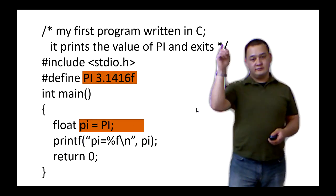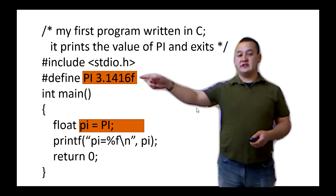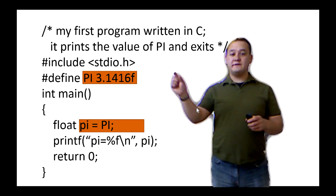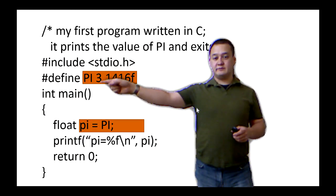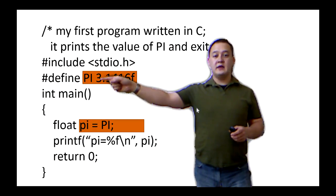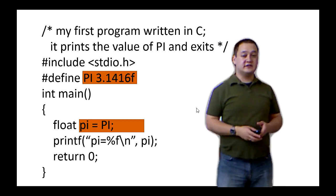The second preprocessor directive, this pound define, says I want to define this word here, this capital P, capital I, as being equivalent to 3.1416f.